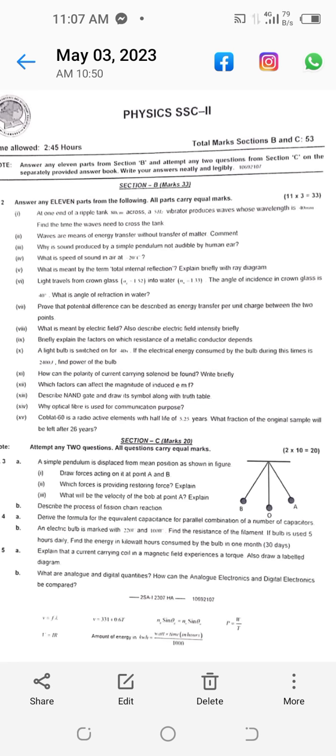Part number 1: Draw force acting on it at point A and B. Number 2: Which force is providing restoring force? Explain. Number 3: What will be the velocity of the bob at point A? Explain. Part number B: Describe the process of fission chain reaction.